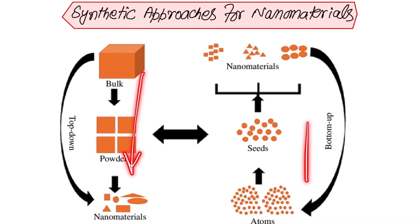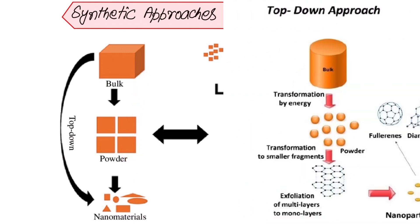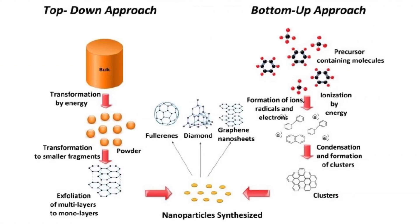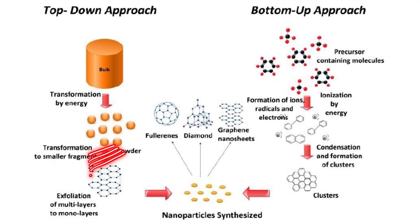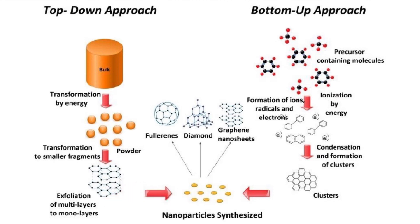Looking at a specific example of top-down and bottom-up approaches, we can see bulk material that is subjected to energy and converted into small particles or powder form. This powder consists of agglomerates of molecules. If the material is in the form of sheets, the next step is exfoliation of these layers to a single layer, which is then converted into nanoparticles. Examples include fluorescent diamond and graphene nanosheets.